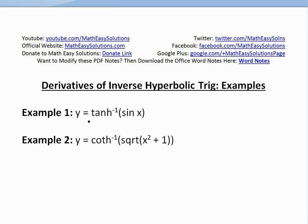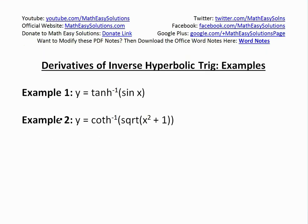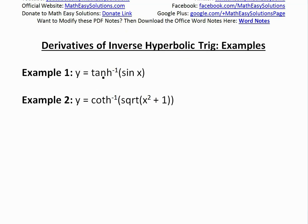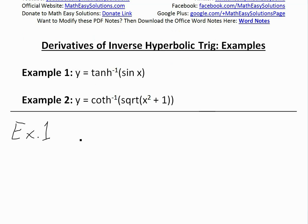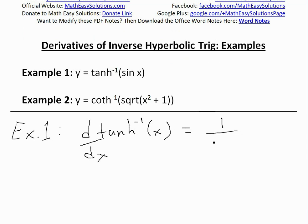The first one is y equals inverse hyperbolic tan of sine of x. So you have a sine of x inside an inverse hyperbolic function. Solving this is very similar to any other method — you're just going to have to use the derivative of inverse hyperbolic tan and then apply the chain rule. The derivative of dy/dx of inverse hyperbolic tan of x, as I showed in my earlier video, is just 1 over 1 minus x squared. See the video link below for the proof of this.